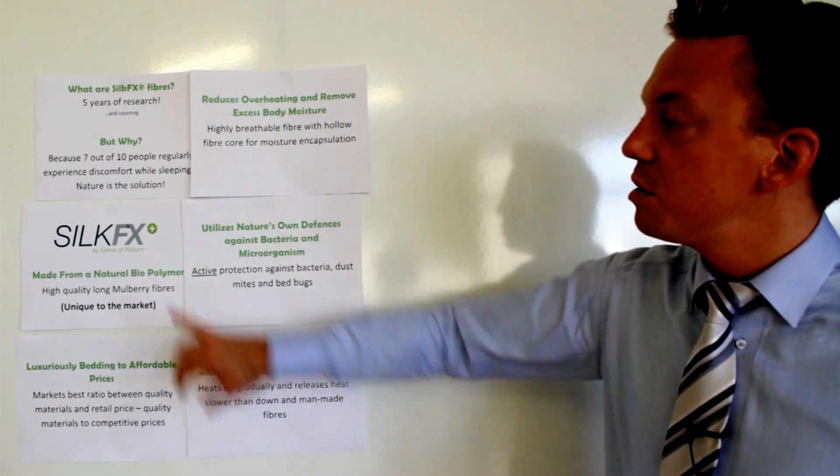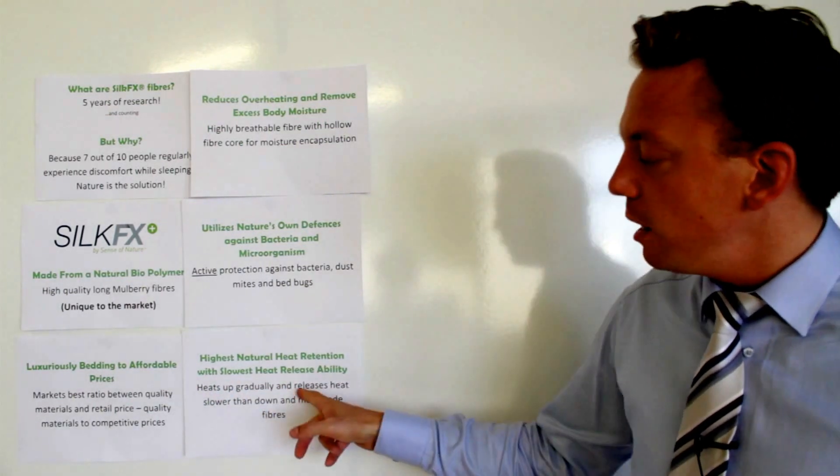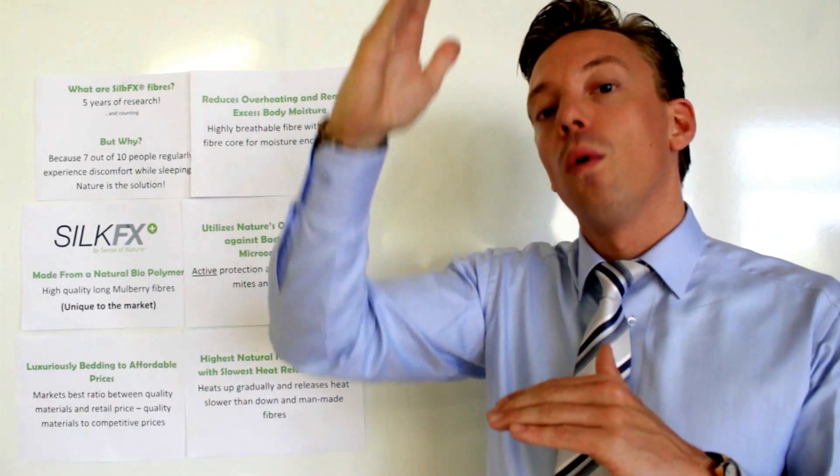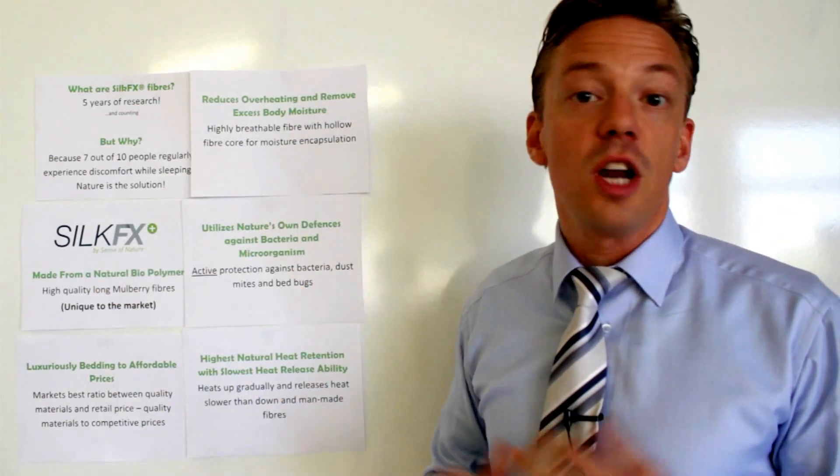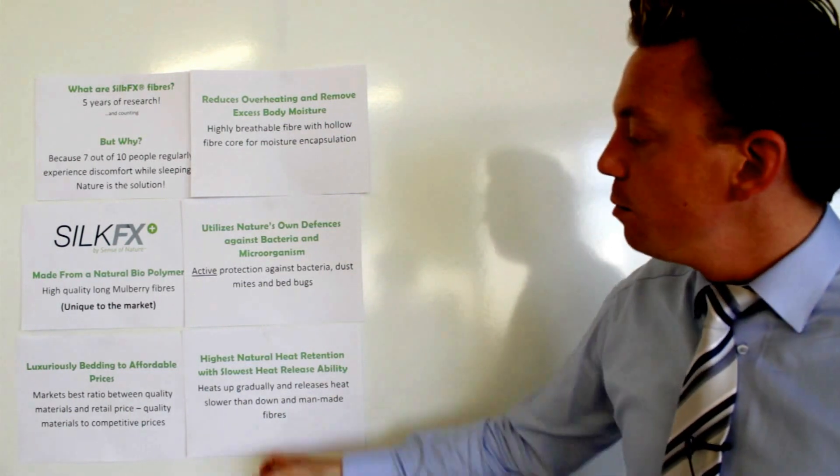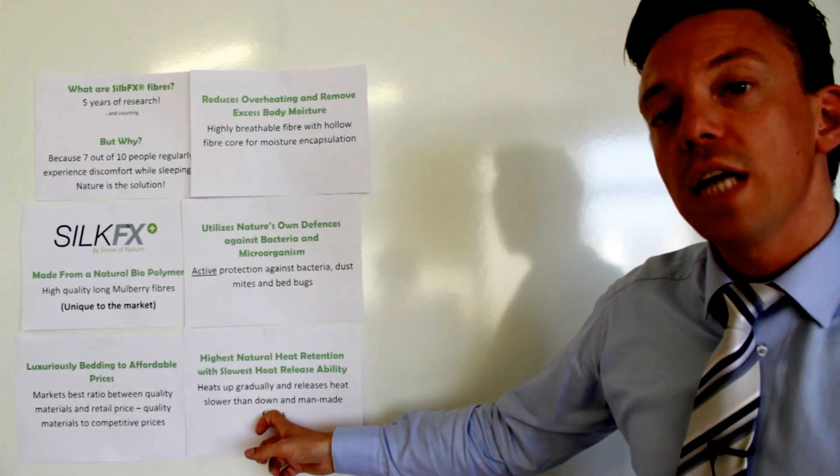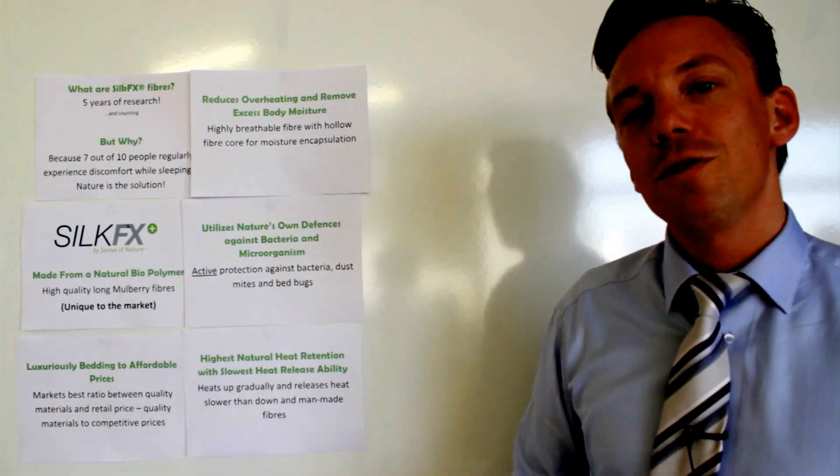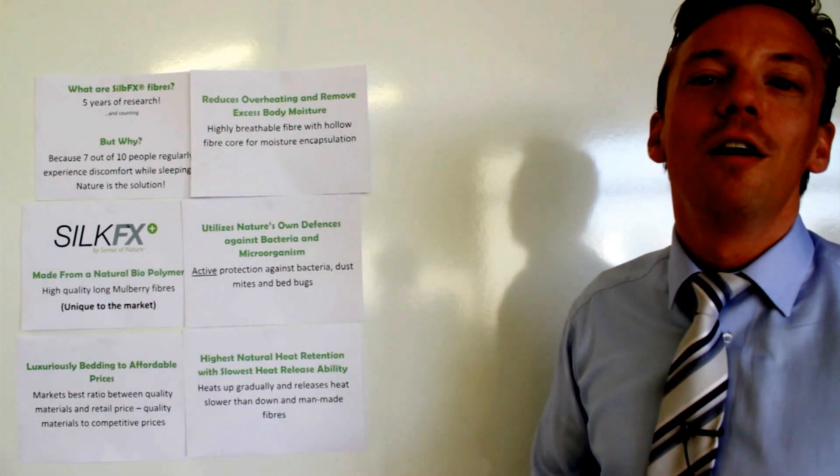What that means for you is that when you sleep with Silk Effects fibers, they gradually heat up or cool down in connection with your body and sleep patterns. When the temperature goes down, they restore and retain enough heat for you to have a stable sleeping temperature throughout the night.